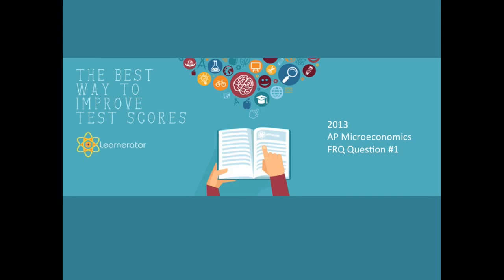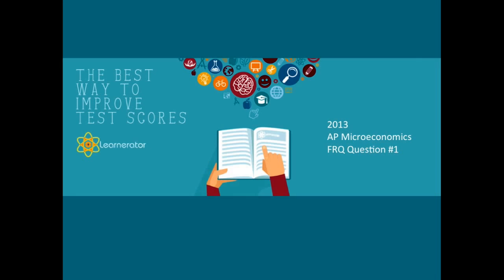Hey, it's Will from Learnerator, and in this video I'm going to walk you through the 2013 AP Microeconomics FRQ question number one. This question is related to monopolists, and therefore we are going to be looking at the conditions of marginal revenue equals marginal cost and see how a monopolist operates in the circumstance of understanding perfect price discrimination.